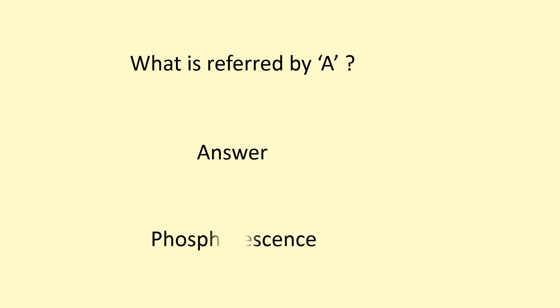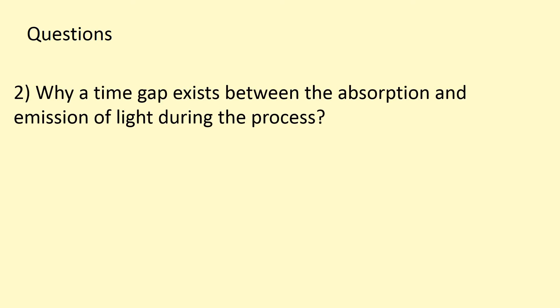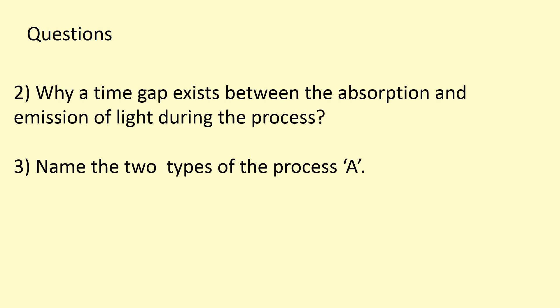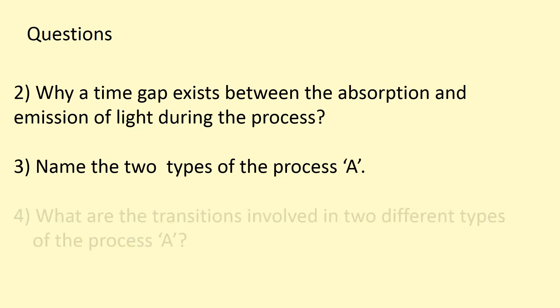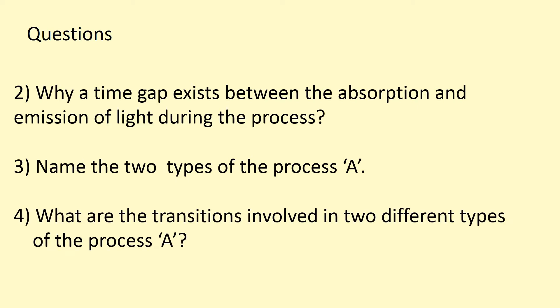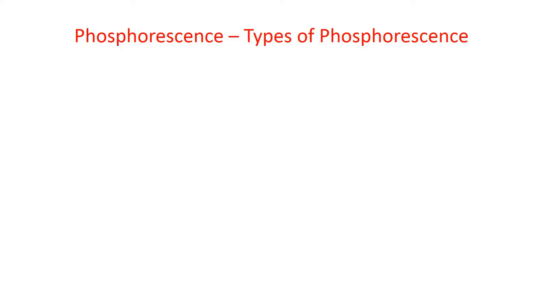The answer is phosphorescence. Other questions are: Number 2 — what time gap exists between the absorption and emission of light during the process? Number 3 — name the two types of the process A. Number 4 — what are the transitions involved in the two different types of the process A? Now let's discuss phosphorescence in detail to get the answers to all the questions.